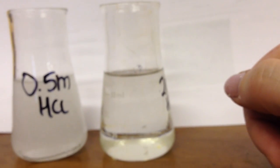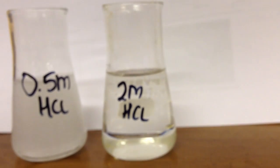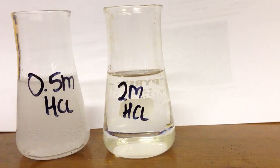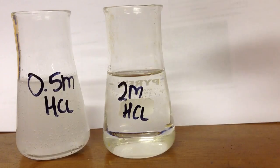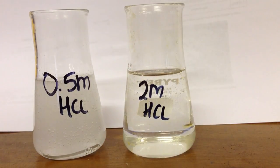And the magnesium ribbon in this second tube has actually completely disappeared. Whereas in the 0.5 molar hydrochloric acid, it's bubbling away still quite happily. And it'll bubble away in there for quite a long time. So the reaction that we had was hydrochloric acid and magnesium ribbon.